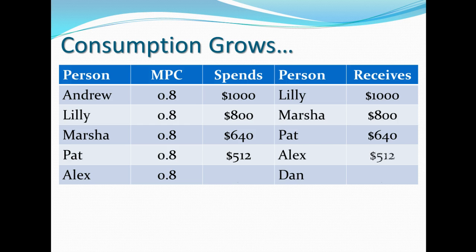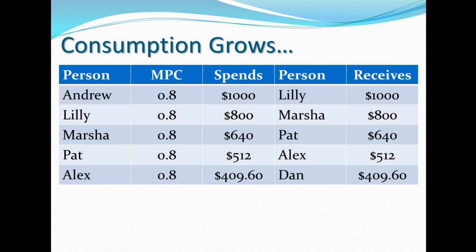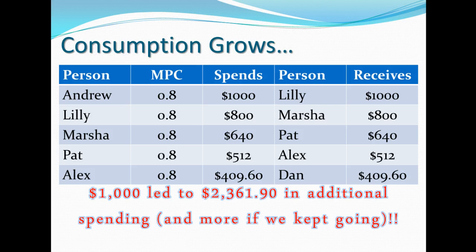Pat buys something from Alex — he's a farmer, so let's say manure. Alex has $512, saves some of it, and spends $409.60 on grass for his cows. The idea is that this original $1,000 cascades throughout the entire economy. So that $1,000 across these five transactions actually ends up being a boost of almost $2,400 throughout the entire economy. This is the idea of fiscal policy and the project you guys have been working on.